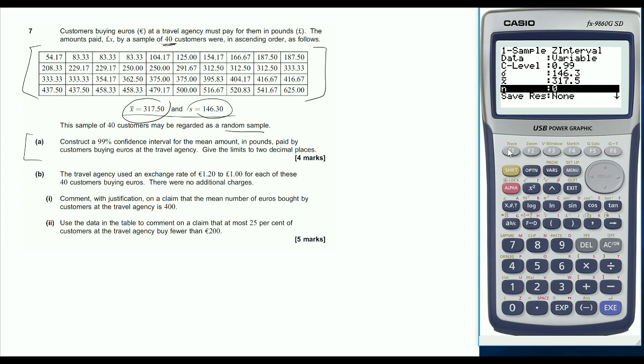and the number in our sample is 40. Some students get confused about putting sigma in there - they want to write that as sigma over root n. But when we're using the interval function on the calculator, this does that for us.